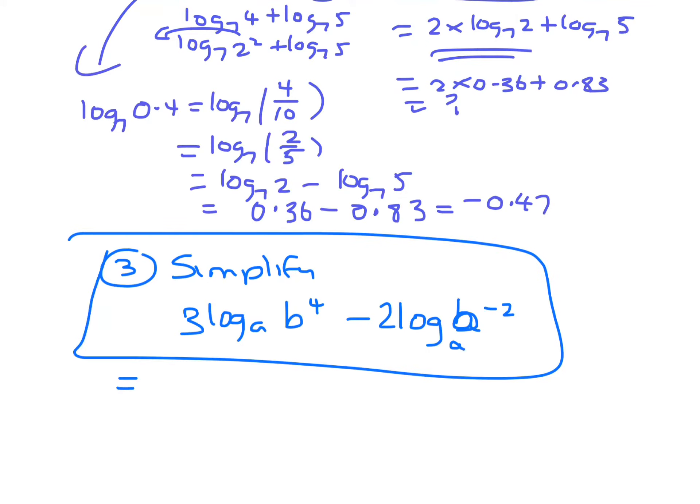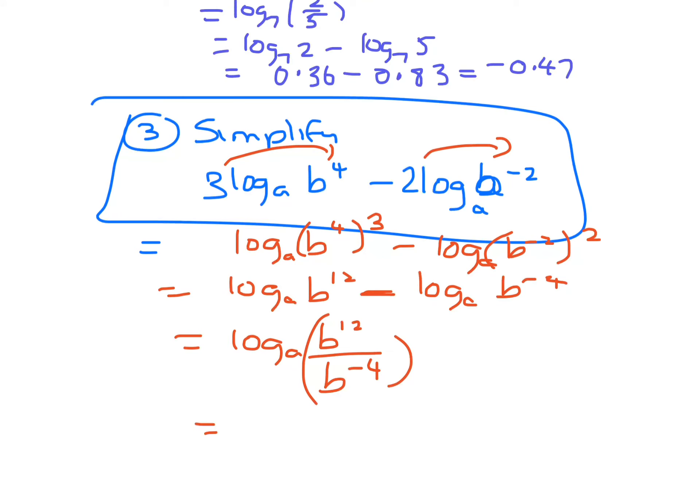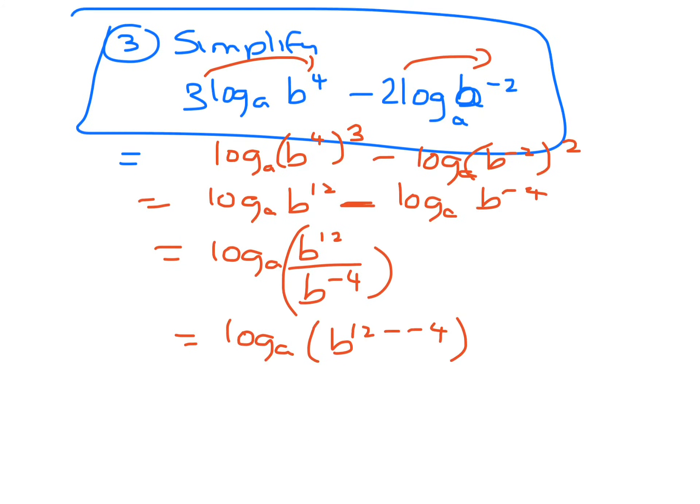Okay, so simplifying this one. So step 1 would be to bring these indices up. So that's log base a of b to the 4 to the 3 minus log base a of b to the minus 2 times 2 is minus 4. So that's log base a of b to the 12. Now because that is a minus, then you divide by the other one, because you're subtracting the indices. So that's log base a of b to the 12 minus minus 4, which will equal log base a of b to the 16.